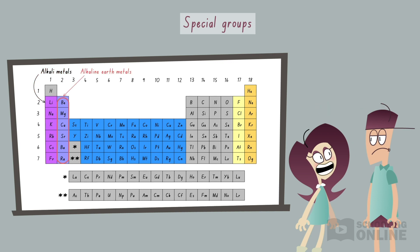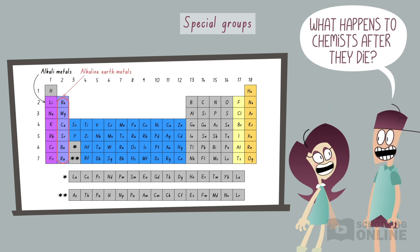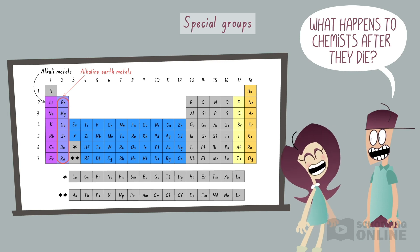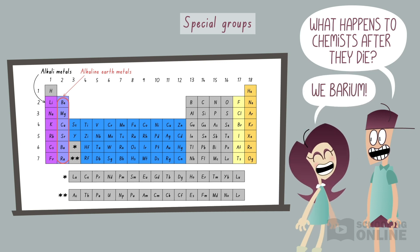Group 2 elements are the alkaline earth metals. They have two valence electrons, and are less reactive than group 1 elements.